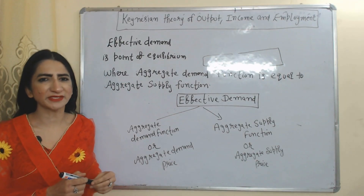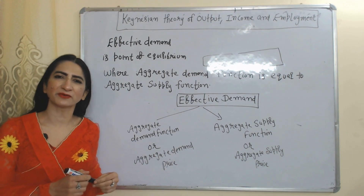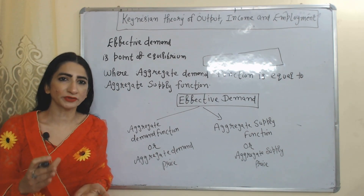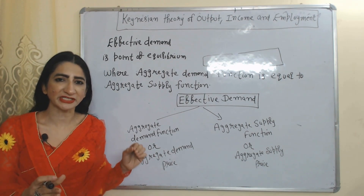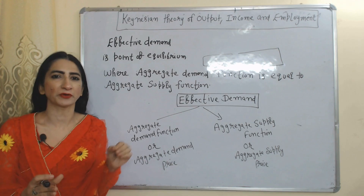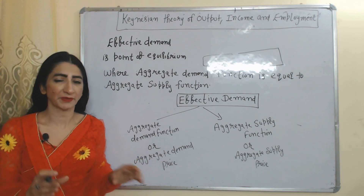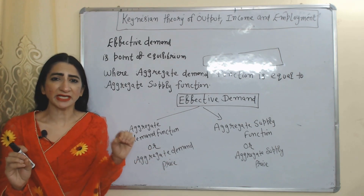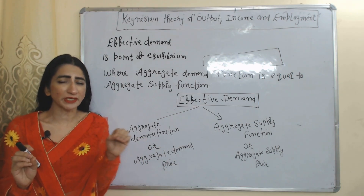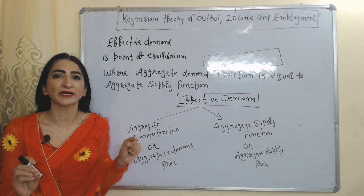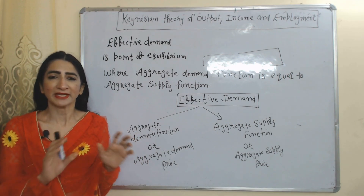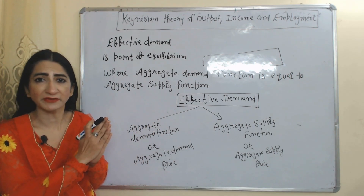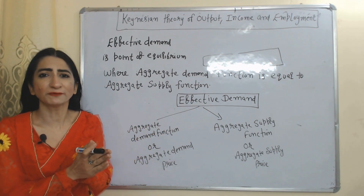Hello everyone, my name is Vanessa H. I hope you all are staying healthy. Today we are going to talk about Keynesian theory of income, output, and employment determination. According to this theory, we can determine income, output, and employment with the help of effective demand. That means the entire theory is based on effective demand.